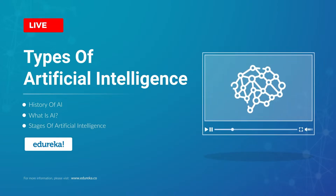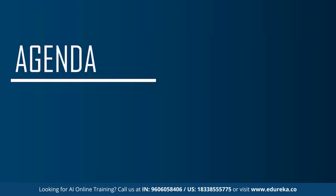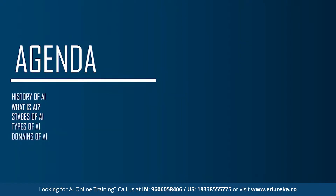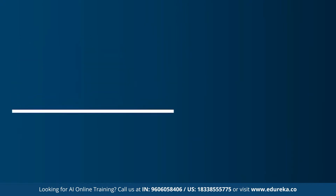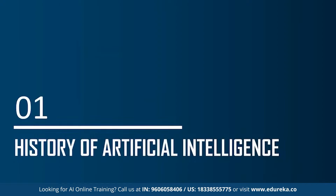Let me begin by discussing the agenda. We'll start by understanding the history of artificial intelligence, then what exactly AI is, followed by the different stages of AI and the different types of artificial intelligence. We'll finally end by understanding the different branches or domains of artificial intelligence. Now let's get started with the first topic: the history of artificial intelligence.